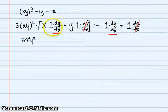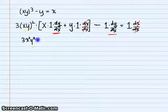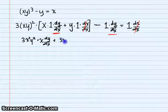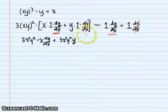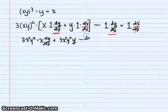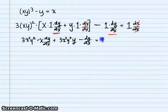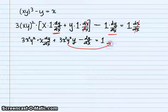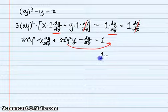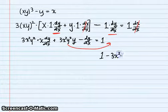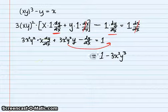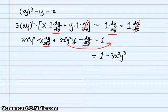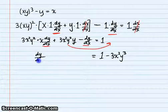We're going to multiply through to isolate dy/dx. So we get 3x²y² times dy/dx plus 3x²y³ minus dy/dx equals one. Now we can subtract the non-dy/dx term over, so we get one minus 3x²y³ on the right side, and on the left side we factor out the dy/dx terms.